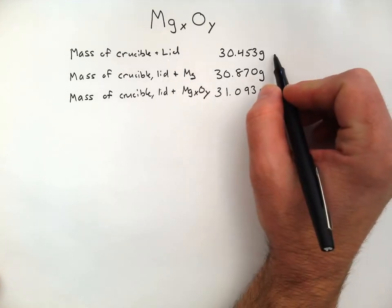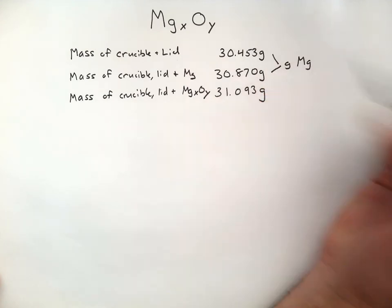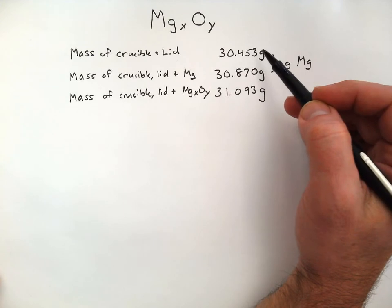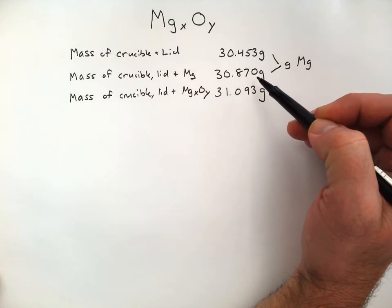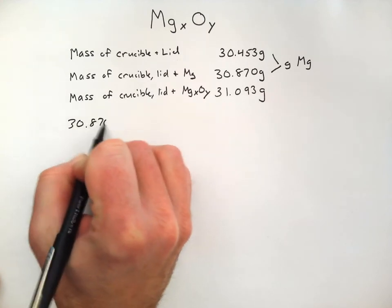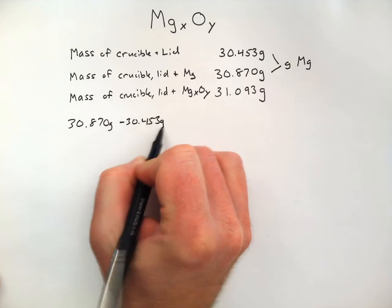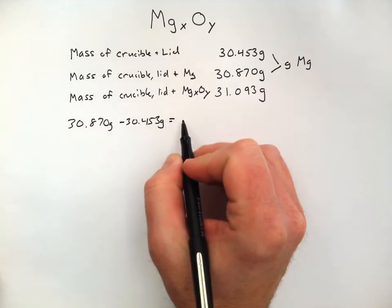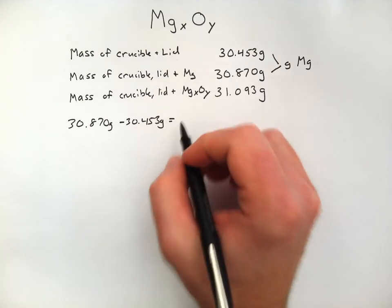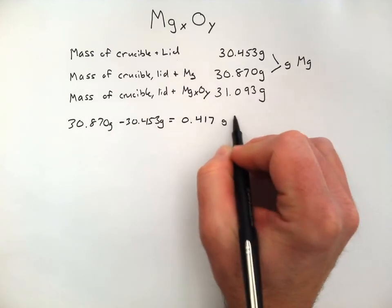So, to get the grams of magnesium, I basically just need to subtract the weight of the container out from the weight of the container and the magnesium. So, quick subtraction there, 30.870 grams minus 30.453 grams, and I get a mass of 0.417 grams of magnesium.